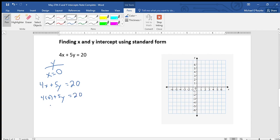Well, 4 times 0 is just 0, so it disappears. 5y equals 20, divided by 5. Y equals 4. So that tells me the y-intercept is 4.